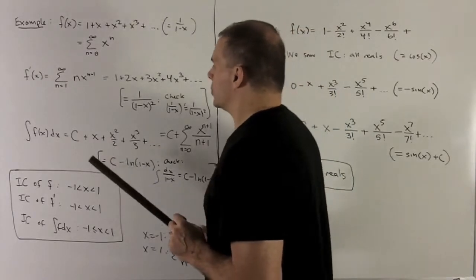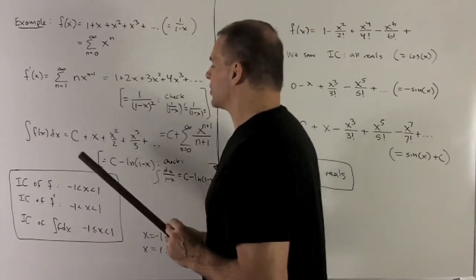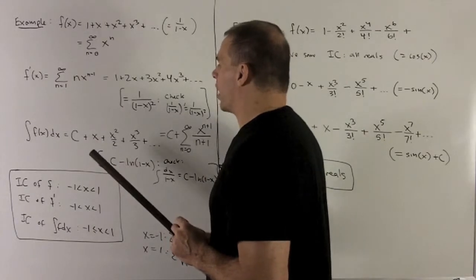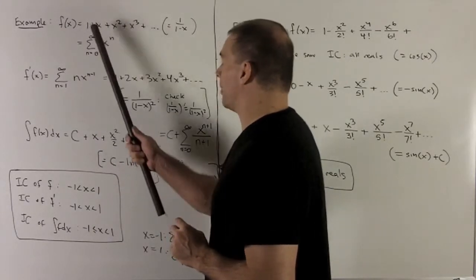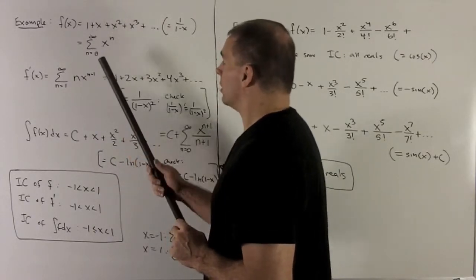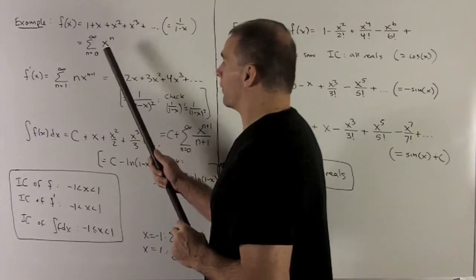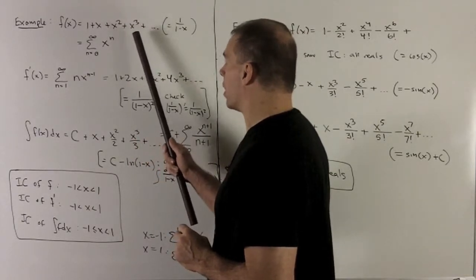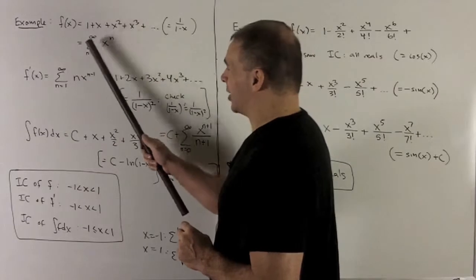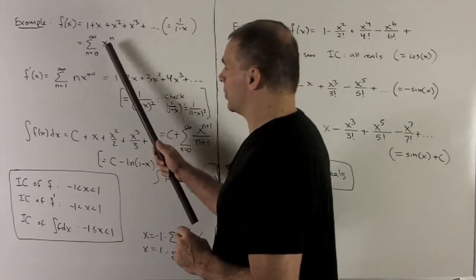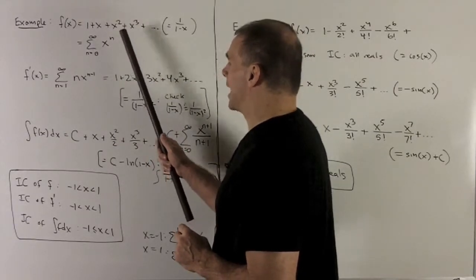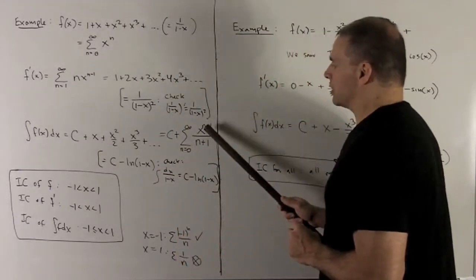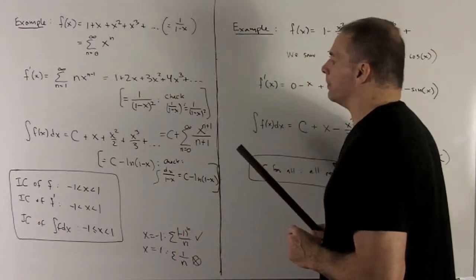Let's take a look at the antiderivative. Taking the antiderivative of f of x dx: I start with my constant of integration, and then I can go term by term. That gives me x plus x squared over 2 plus x cubed over 3 plus x to the 4th over 4. Or I could just look at the sum and do it to the sequence element — add 1 and flip it over — giving x to the n plus 1 over n plus 1.